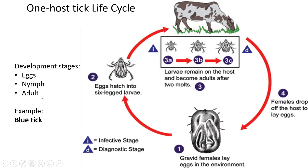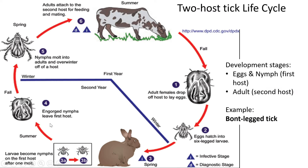You also need to be able to give an example of a one-host tick — that would be the blue tick. Caution: when they give you a life cycle diagram, don't just look at the picture of the tick and say 'blue tick.' Sometimes a two-host or three-host cycle is shown and the tick in the picture may look like a blue tick, but it isn't. Always look at the number of hosts, not the picture of the tick. This is a one-host tick, and an example is the blue tick.